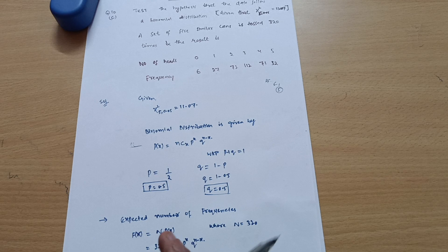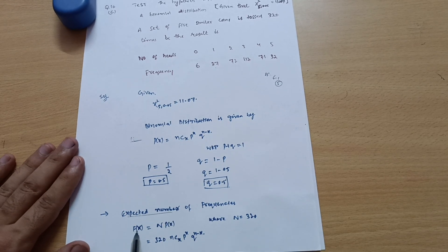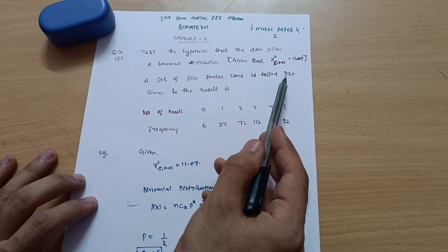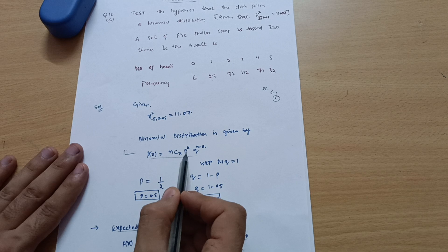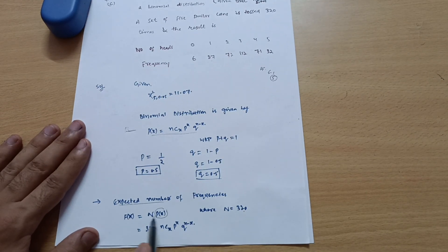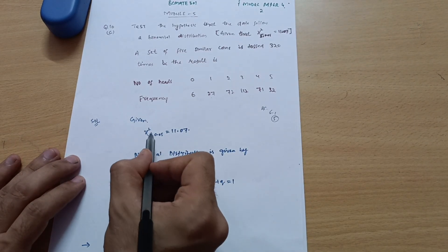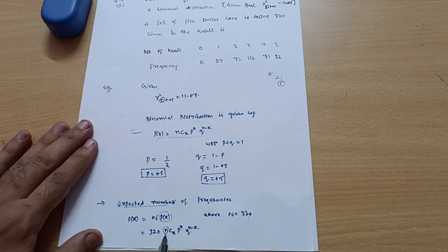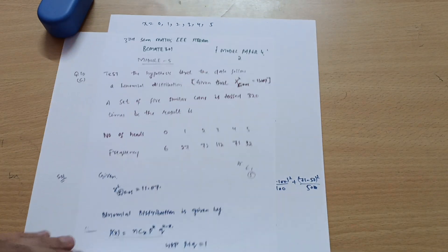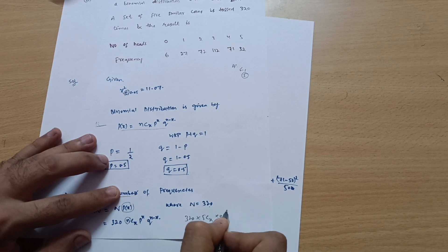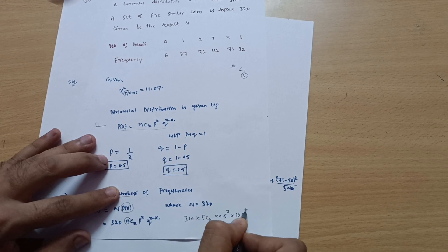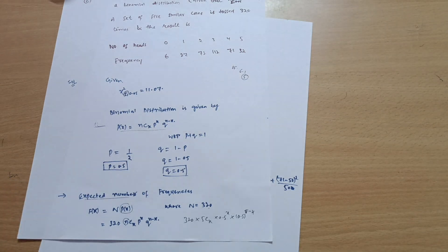To calculate the expected number of frequencies, use the formula: F(x) = N · P(x), where N = 320 (the number of tosses). Substituting: F(x) = 320 × 5Cx × (0.5)^x × (0.5)^(5−x). Here the small n in the binomial formula is 5, corresponding to the 5 coins.